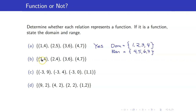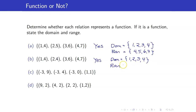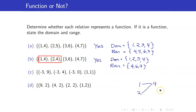For the second one: 1, 2, 3, 4 — no first coordinate was repeated, so yes, this is a function. The domain is still {1, 2, 3, 4} and the range is the set of all second coordinates: {4, 6, 7}. Take note that it's okay for 1 and 2 to go to the same element 4 — that's fine.